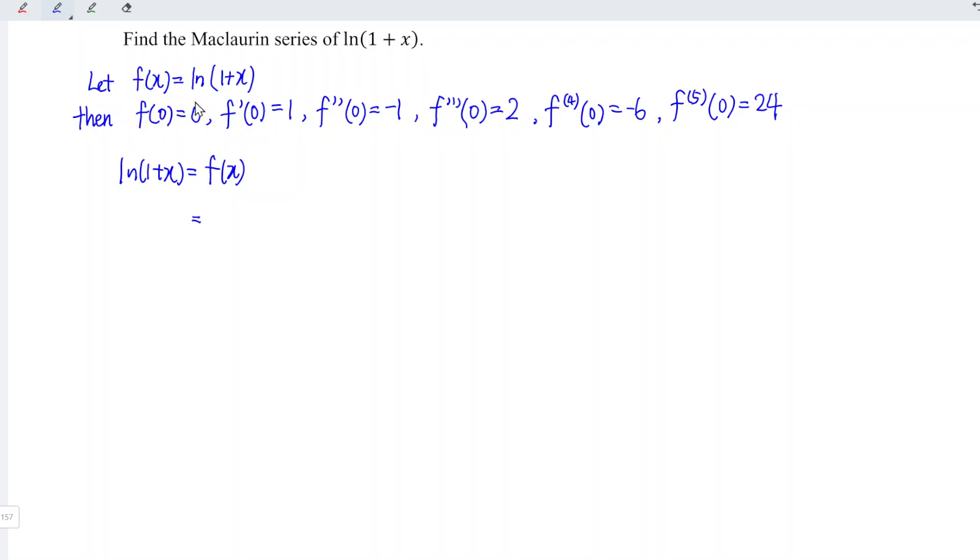Firstly, refer to the 0 order at point x equals 0 with value 0. Since this is 0 order, we take it over 0 factorial and x to the power of 0. We just have to follow the order.